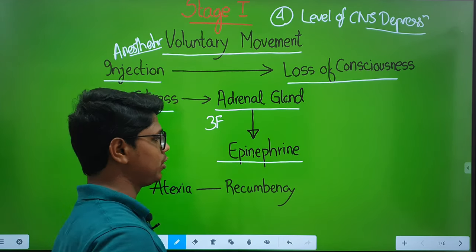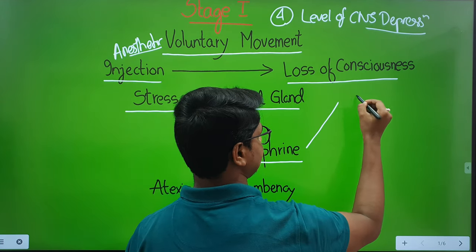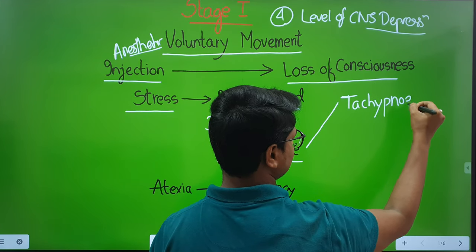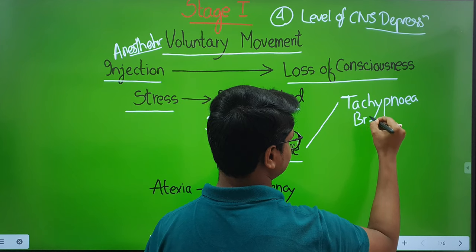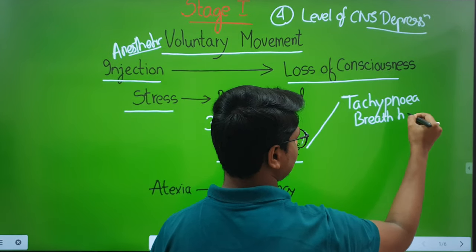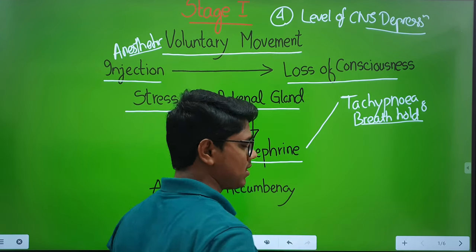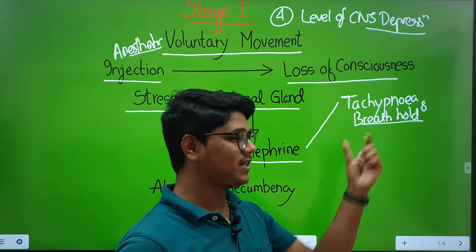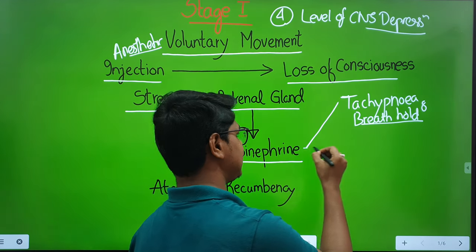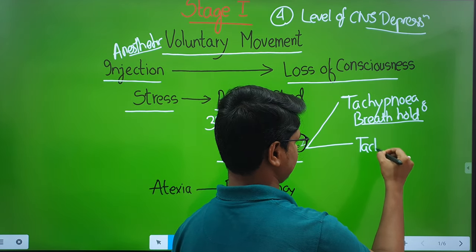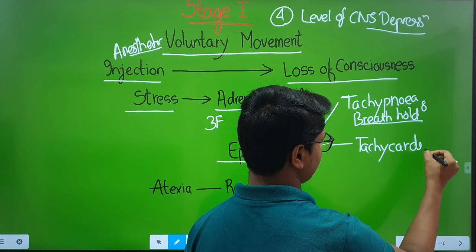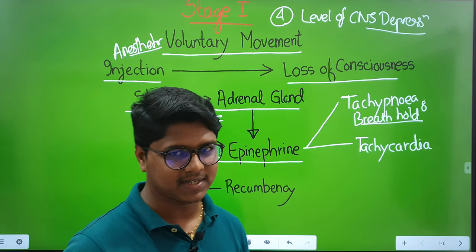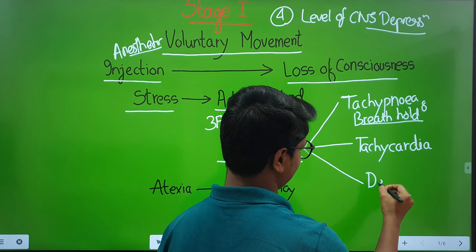When there is secretion of epinephrine, you will find tachypnea — that is faster respiration. Sometimes you may find breath holding. When you are frightened — suppose on a lonely road at night you saw something like a ghost — you will find breath-holding respiration. Then you will find increase in heart rate, tachycardia. Your heart rate will become very fast. Sometimes in some animals they also defecate and urinate, so you will find defecation and urination.